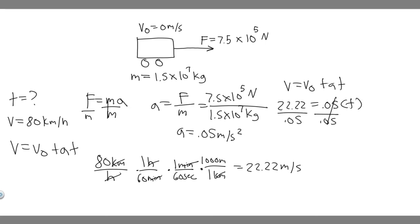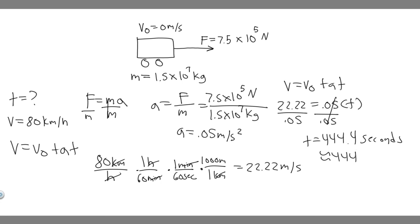Doing 22.22 divided by 0.05, you get t equals 444.4 seconds. So the answer is approximately 444 seconds. If you want to convert it to minutes, just divide by 60 — that cancels the seconds and gives minutes — and you get 7.4 minutes.